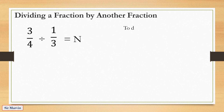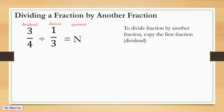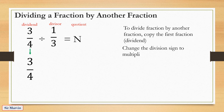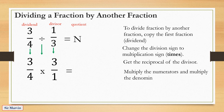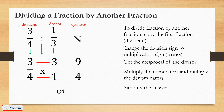Dividing a fraction by another fraction: 3 fourths divided by 1 third equals n. To divide a fraction by another fraction, copy the first fraction (the dividend) — retain 3 fourths. Change the division sign to multiplication, then get the reciprocal of the divisor: 1 third becomes 3 over 1. Multiply the numerators and denominators: 3 times 3 equals 9, and 4 times 1 equals 4.